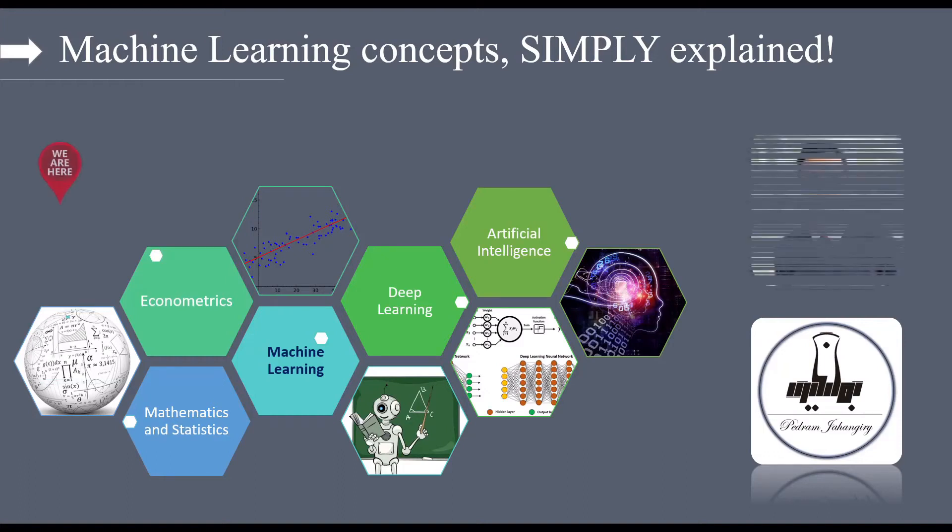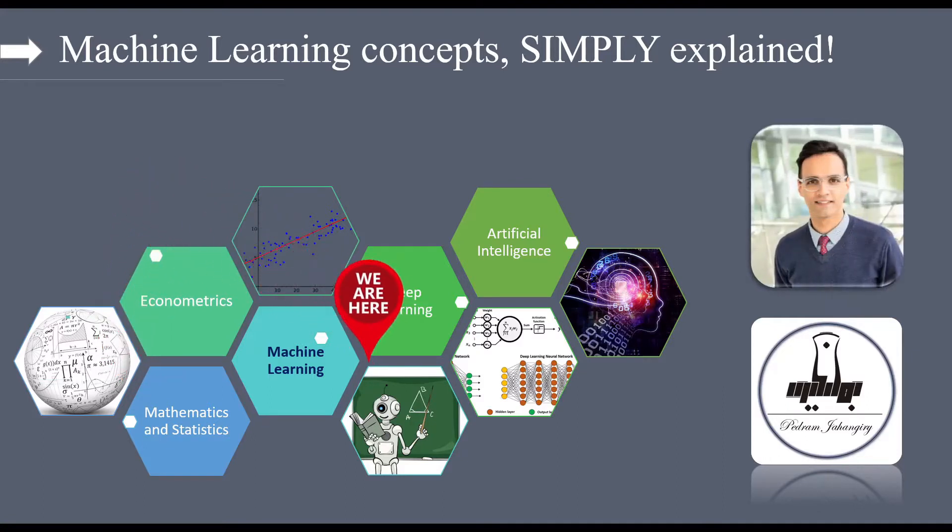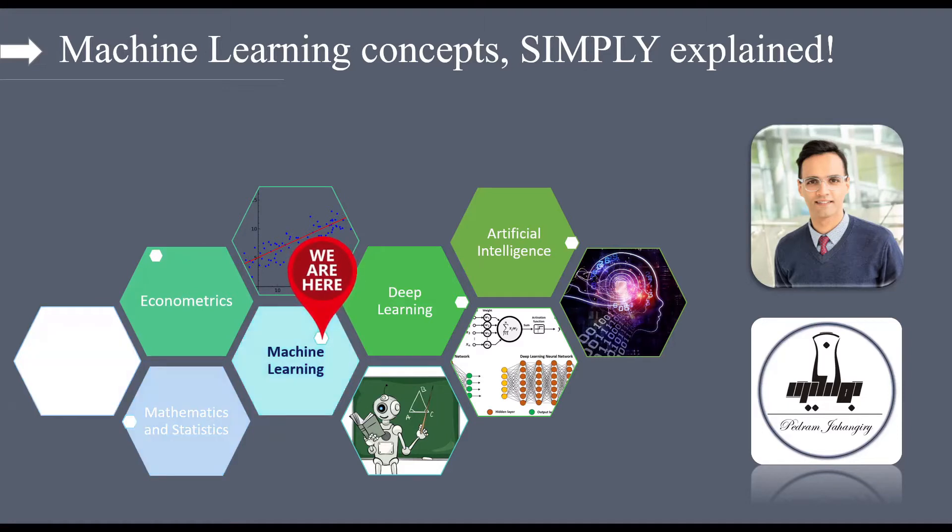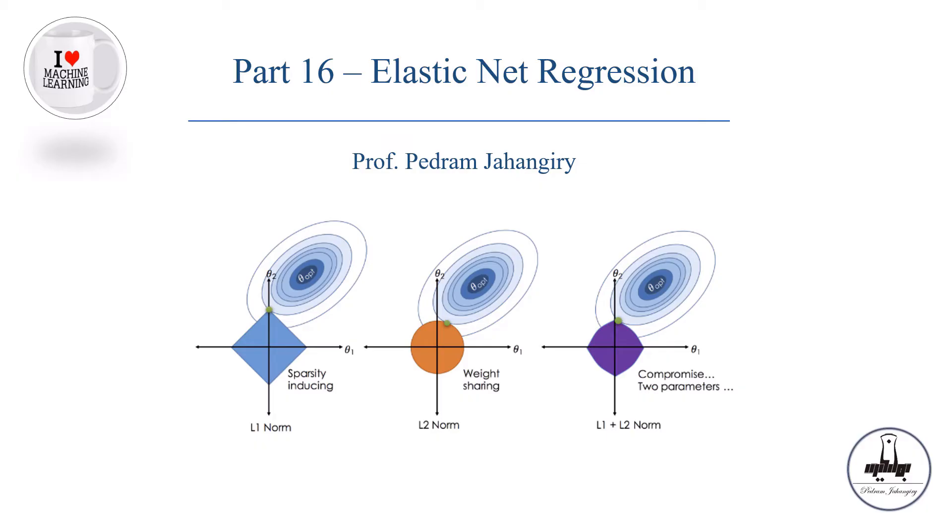Hey guys, my name is Pedron and I'm a professional practice assistant professor in finance. I'm also a CFA charter holder. This is another episode of my crash course in machine learning concepts, Simply Explained. Part 16, elastic net regression. This is another type of penalized regression model, which is a combination of lasso regression and ridge regression. Now let's dive into the details.